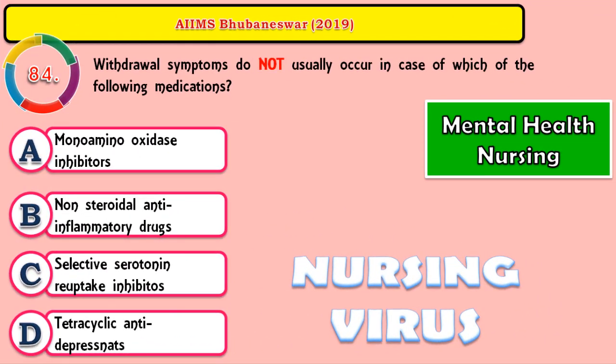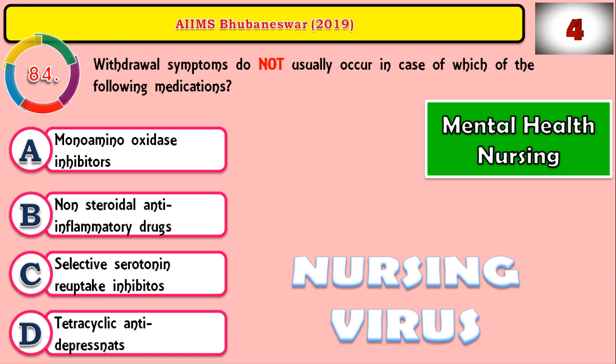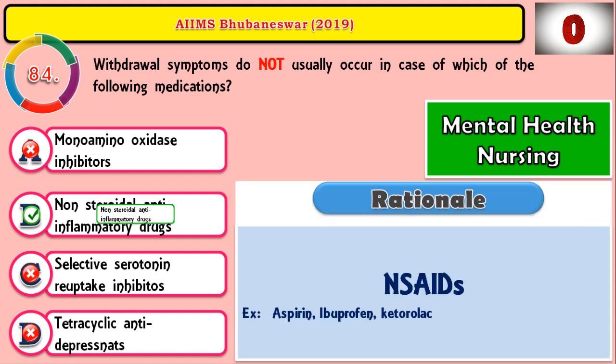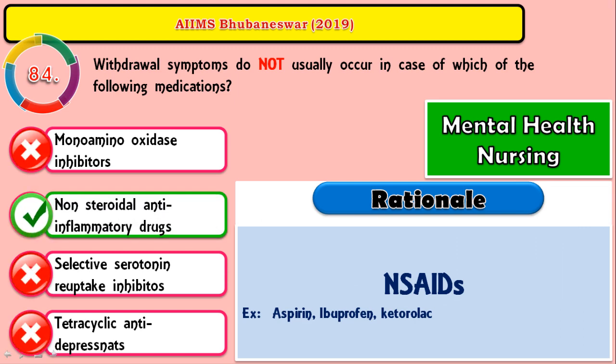Question 84: Withdrawal symptoms do not usually occur in case of which of the following medications? The correct answer is non-steroidal anti-inflammatory drugs (NSAIDs), which are a kind of painkiller — examples include aspirin, ibuprofen (Brufen), and ketorolac (Ceterlok).